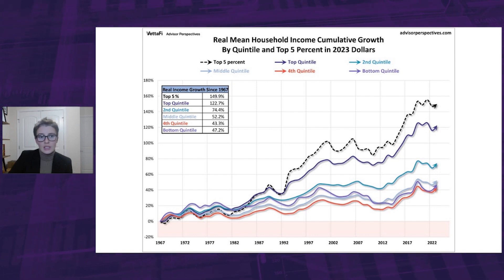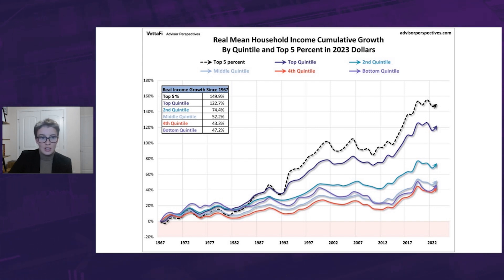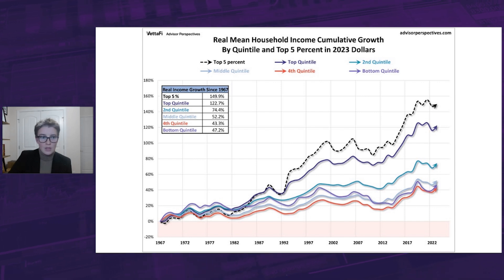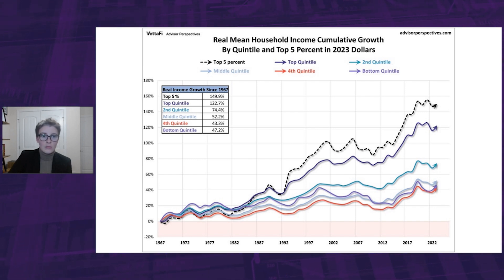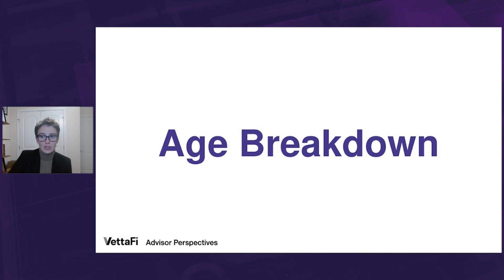Now it's important to understand that the data in these first few charts used the mean income for each quintile. The mean or average income is higher than the median or middle-of-the-range income, but for the remainder of the video, we'll be analyzing the median household income. Which brings us to our next set of charts: median household income by age.